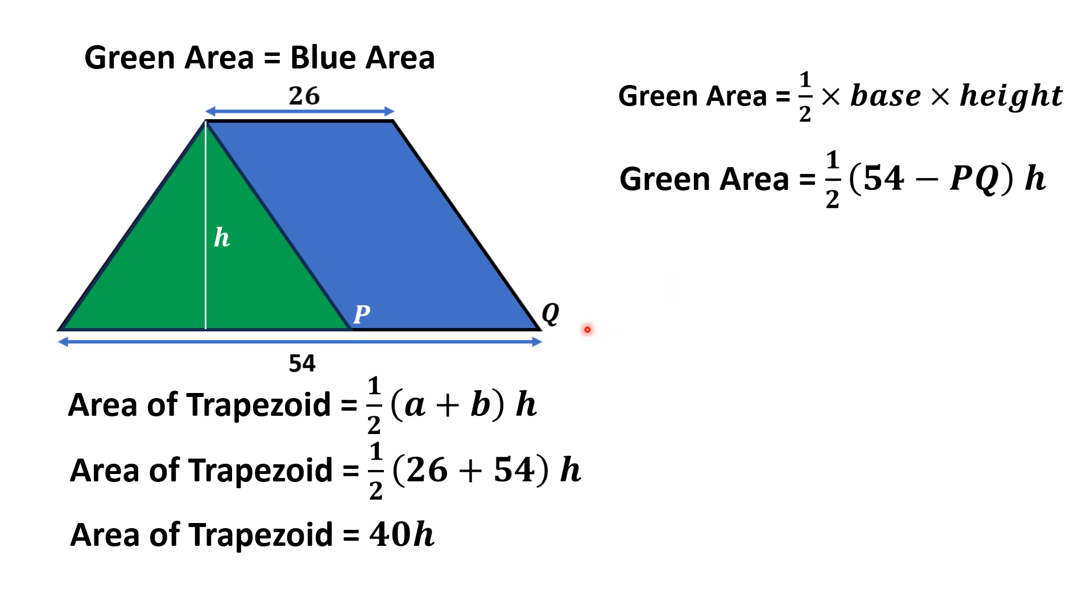This green area is equal to the blue area. It means this green area is exactly half of the area of the trapezoid. So we can equate these two areas.